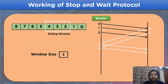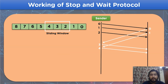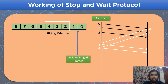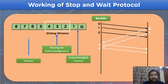Now let's draw some simple conclusions from all the working steps we have seen so far. Frame numbers 0 and 1 represent the acknowledged frames, whereas the frames within the sliding window represent the frames that are waiting for acknowledgement, whereas the remaining frames 5, 6, 7, and 8 are not yet shared with the receiver side.